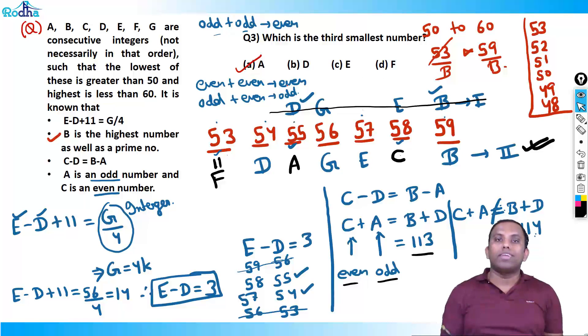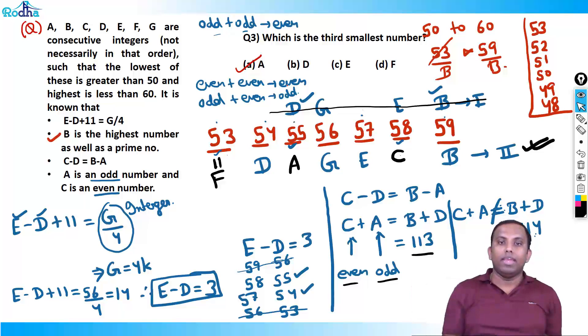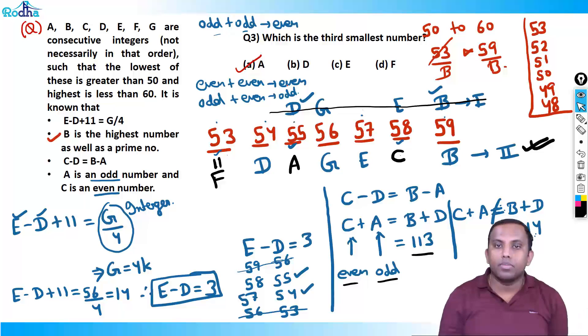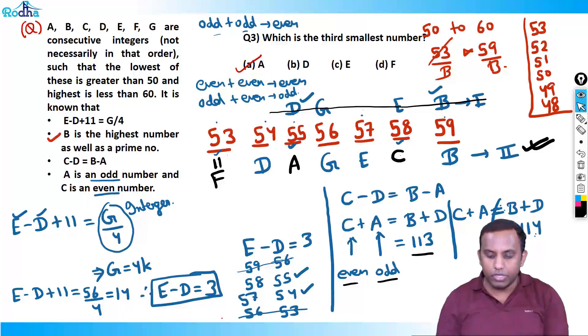We can form 4, 5, 6, or many more questions from this set. The ultimate aim was to calculate all the values of A, B, C, D, E, F, and G. We'll continue this LRDI in the next video. Thank you for watching.